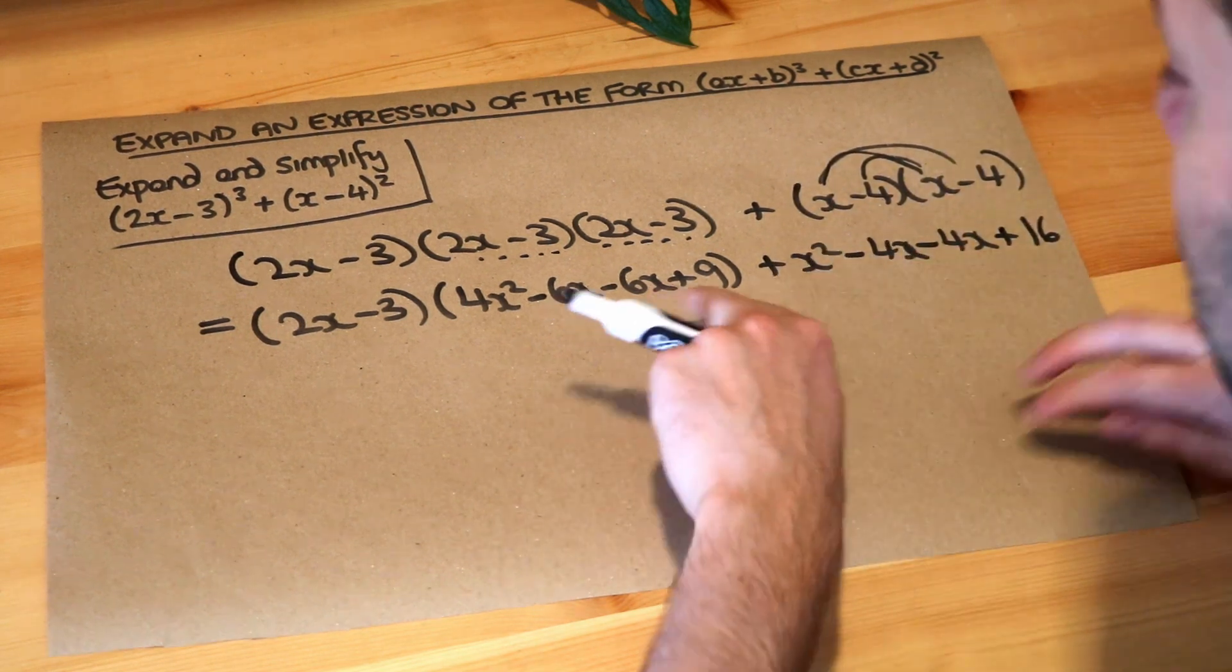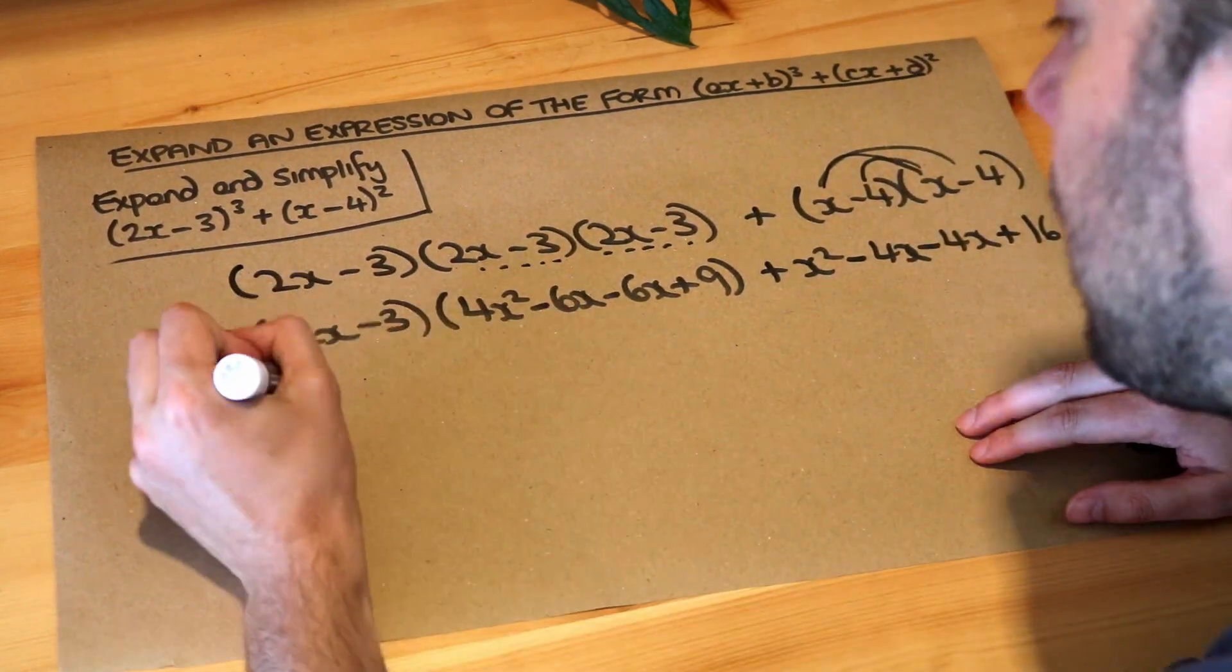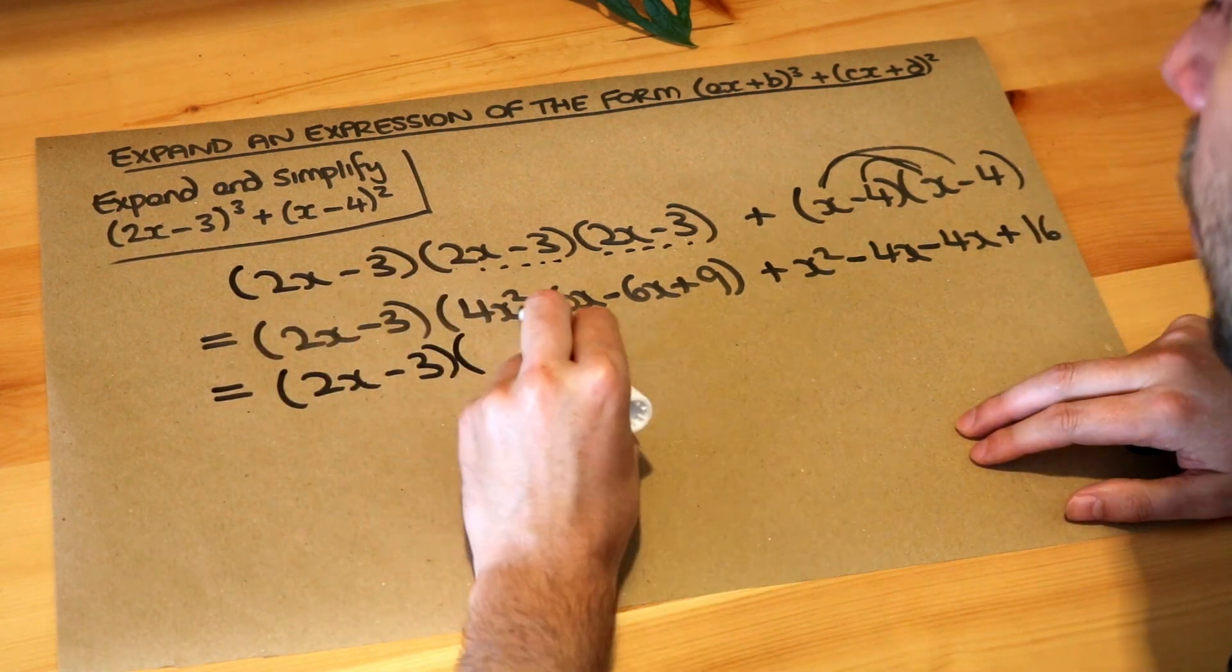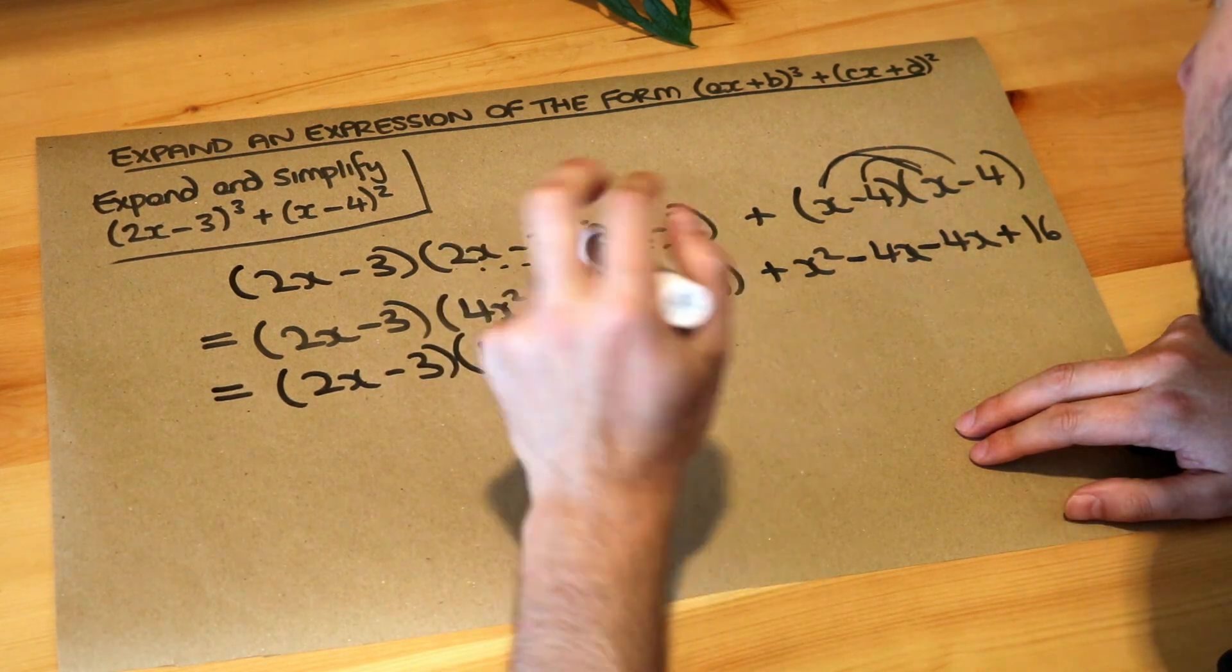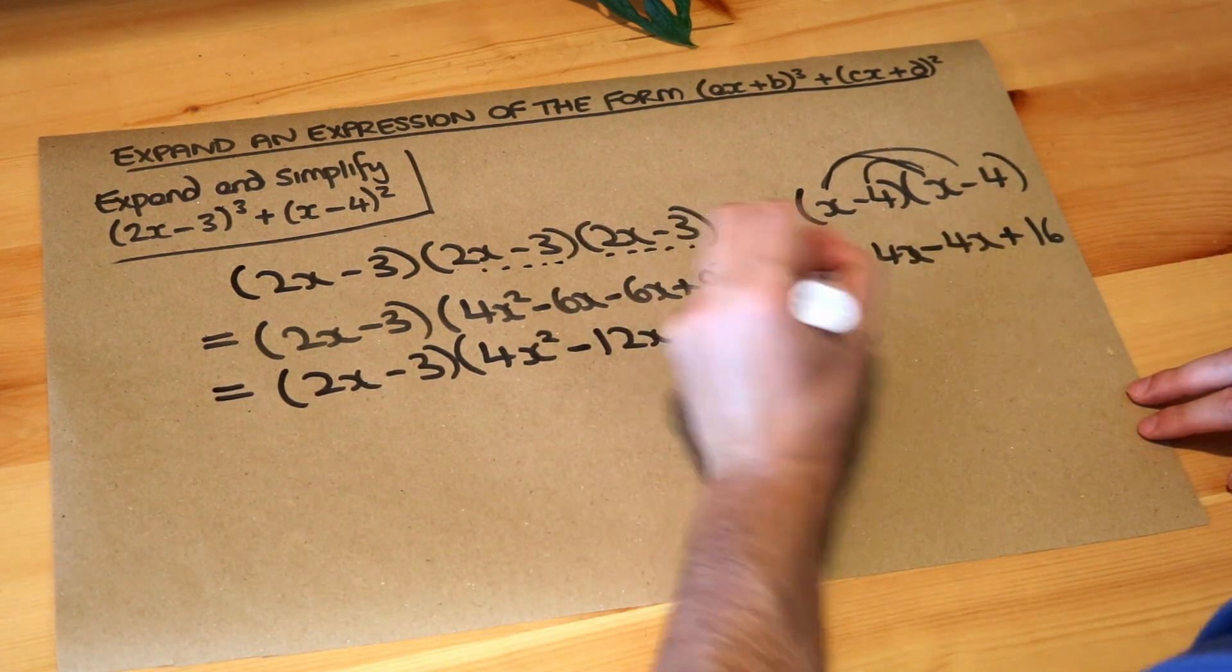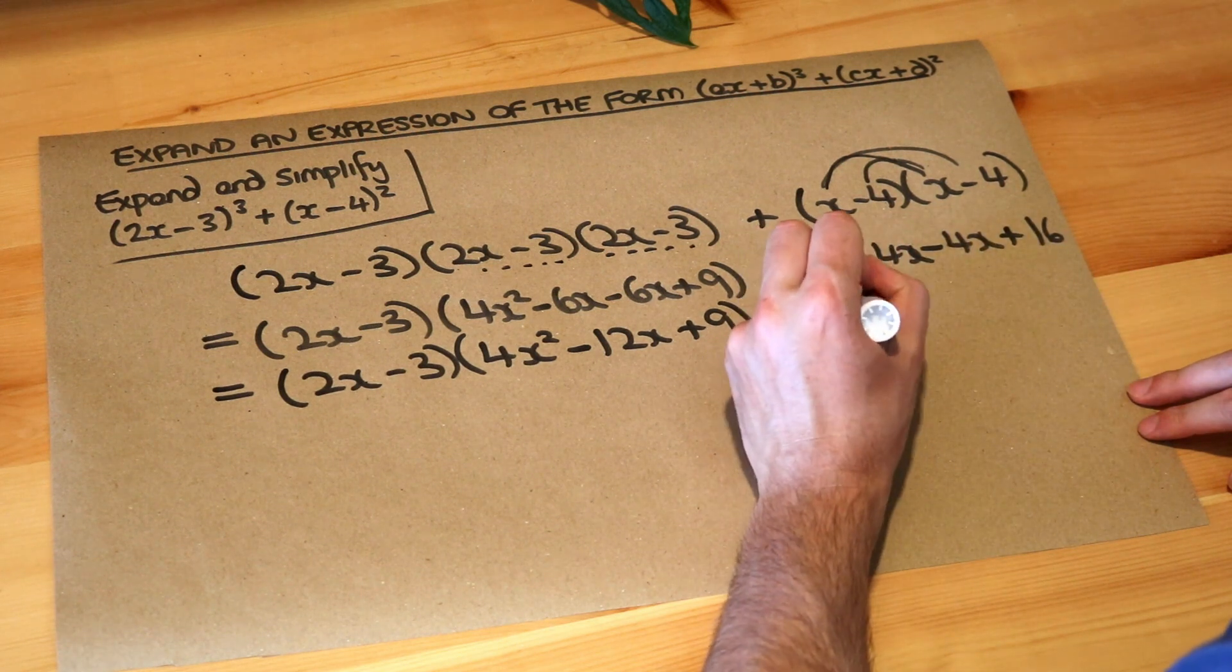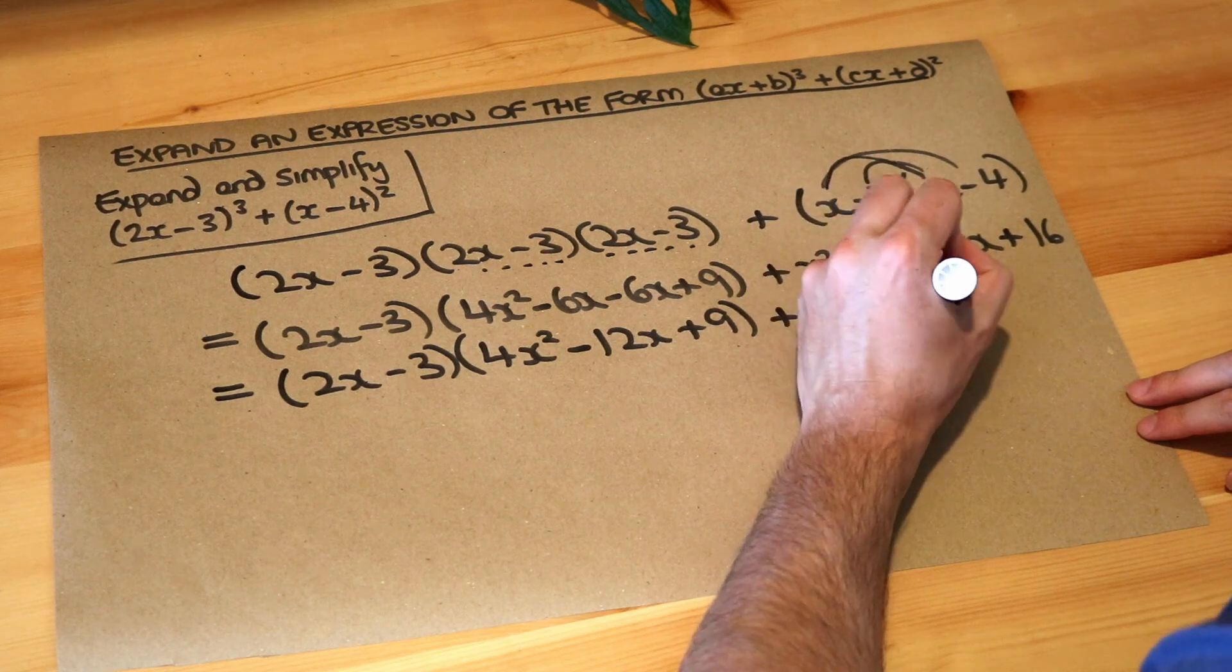That's all expanded over here, we still need to do some expansion here but I'm just going to do some tidying up first. I'm going to collect like terms: we've only got that single x² term, but we've got -6x subtract another 6x, that's -12x, and we've got the +9. And then we might as well tidy up over here as well: we've only got a single x² term, we've got -4x subtract another 4x, that's -8x, and we've got the +16.